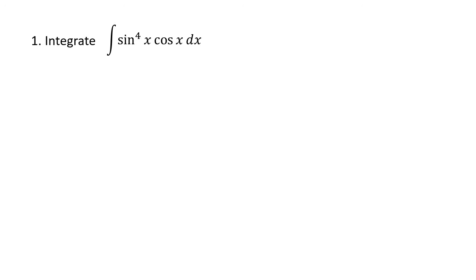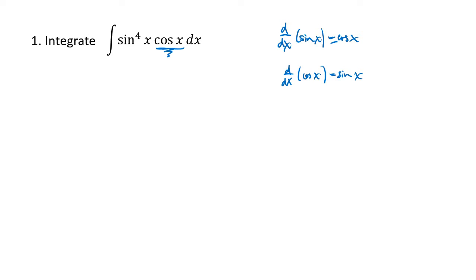I can't do every possible case, but I'll show you a lot of different techniques that come up. This is probably the simplest example, because we have sine and cosine, and we're relying on the fact that the derivative of sine is cosine, and the derivative of cosine is sine. Because we have a single copy of cosine and everything else in our integral is in terms of sine, we're going to use a substitution u equals sine of x.